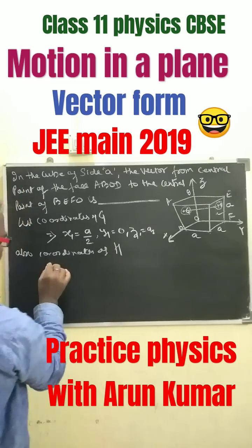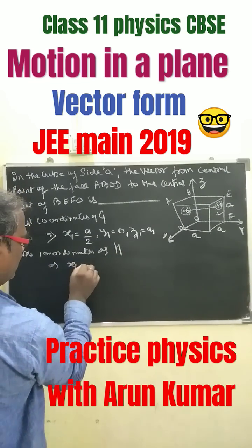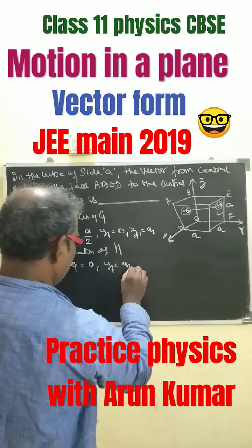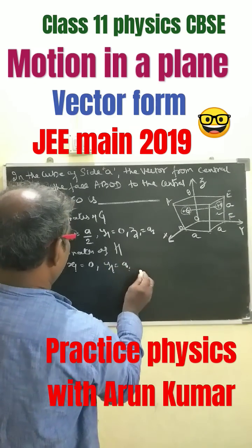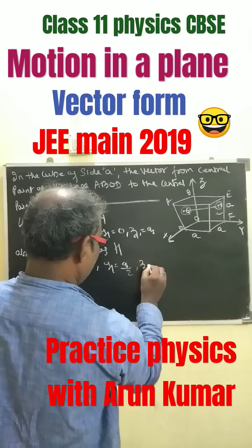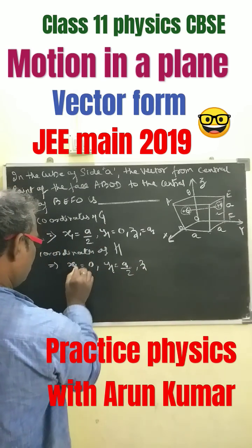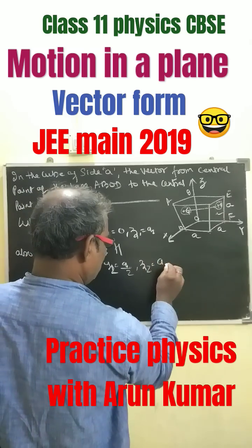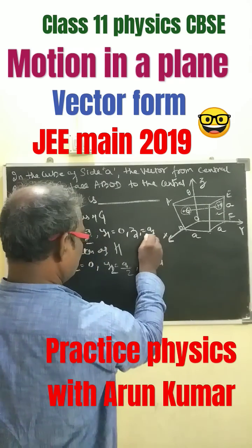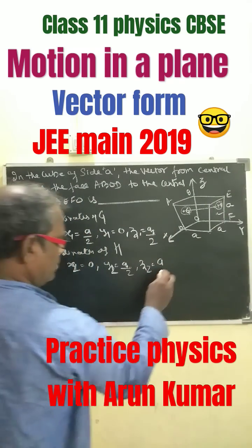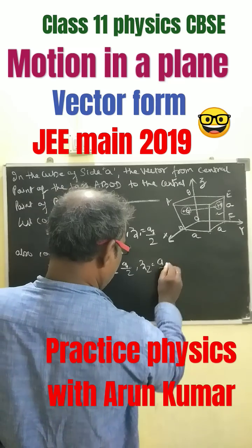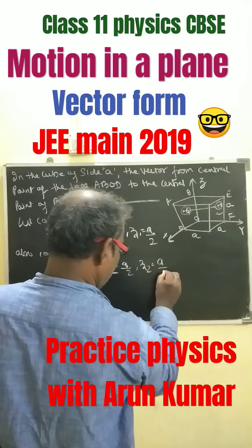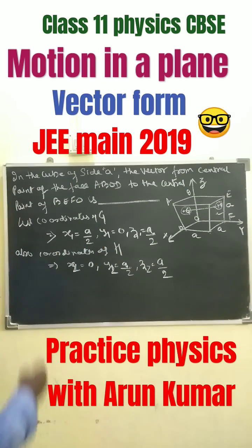Also, coordinates of H: X2 equals to 0, Y2 equals to A/2, Z2 equals to A/2. So X2 is A/2 and Y2 is A/2.